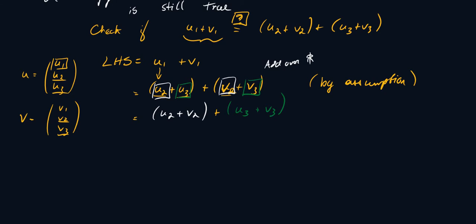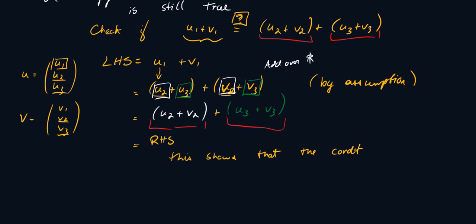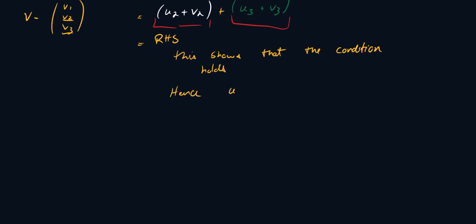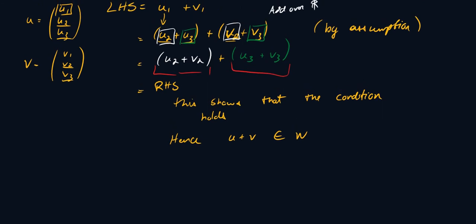That's exactly what I was trying to get: u2 plus v2 and u3 plus v3 are both on the right-hand side. So I've shown the left-hand side equals the right-hand side, proving the condition holds. Hence u plus v belongs to W. This proves that W is closed under vector addition.